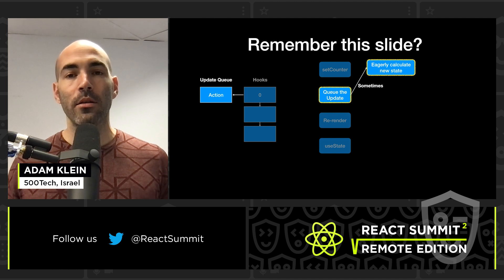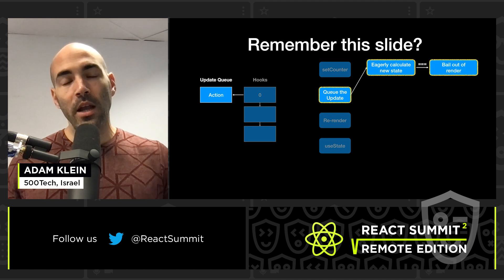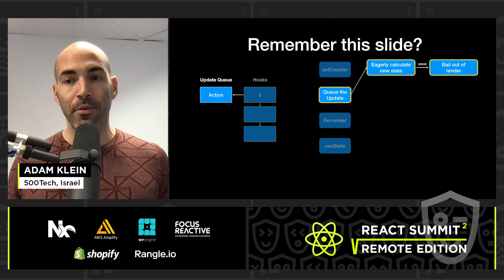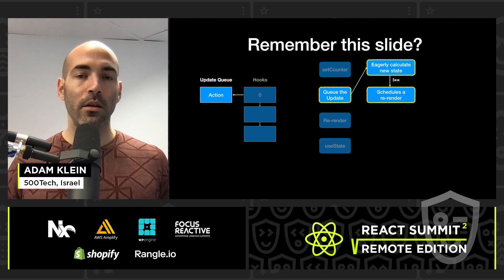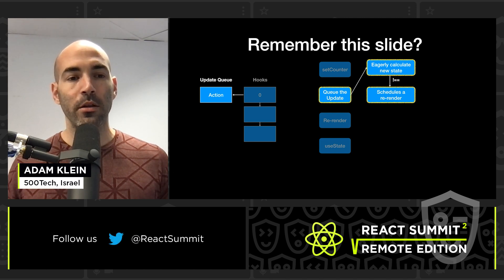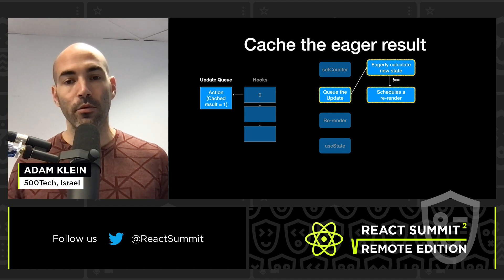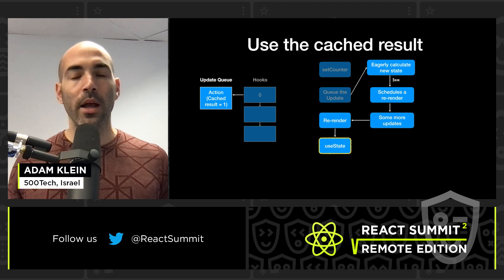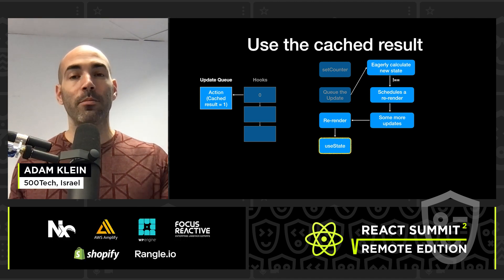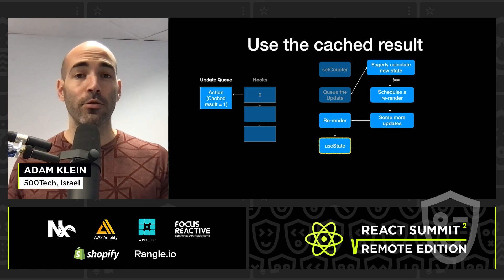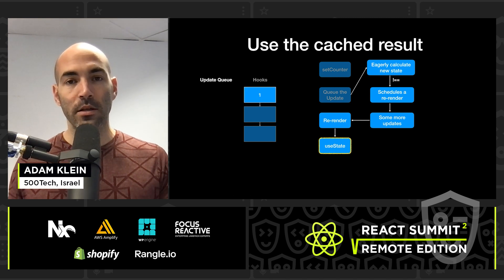It turns out there's another step that React sometimes takes for this optimization: to eagerly calculate the new state immediately when we call the setState function. If the new state is the same as the old state, it doesn't reschedule a re-render. If they are different, it continues normally but caches the result inside the update queue so it can be used later when rendering the component. React processes the queue, and if the action already has a cached result, it uses it and updates the state.